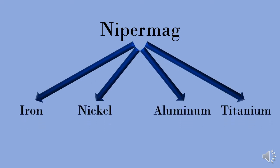One such alloy is Nyper Mag. It is made up of four elements: iron, nickel, aluminum, and titanium. The presence of iron and nickel as magnetic materials makes it possible to make this alloy into a magnet.